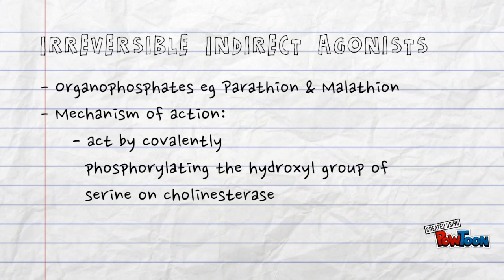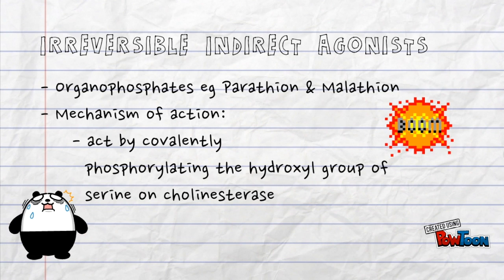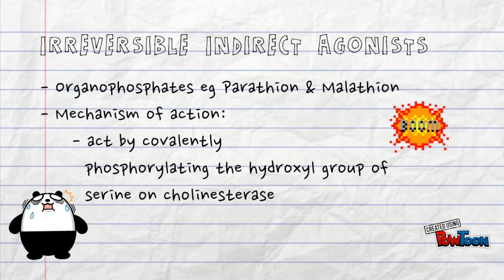For irreversible indirect agonists, they are usually organophosphates — for example, parathion and malathion. They are irreversible because they act by covalently phosphorylating the hydroxyl group of serine on cholinesterase, rendering it useless.